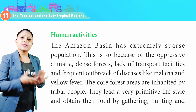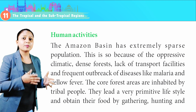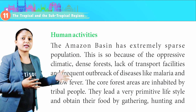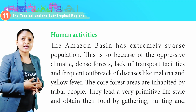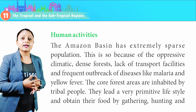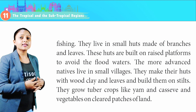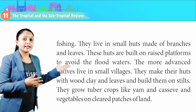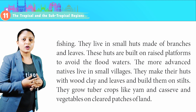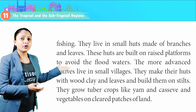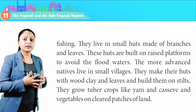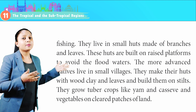Human Activities: The Amazon Basin has an extremely sparse population because of the oppressive climate, dense forest, lack of transport facilities and frequent outbreaks of diseases like malaria and yellow fever. The core forest areas are inhabited by tribal people who lead a very primitive lifestyle and obtain their food by gathering, hunting and fishing. They live in small huts made of branches and leaves, built on raised platforms to avoid floodwaters. The more advanced natives live in small villages and make their huts with wood, clay and leaves built on stilts. They grow tuber crops like yam and cassava, and vegetables on cleared patches of land.